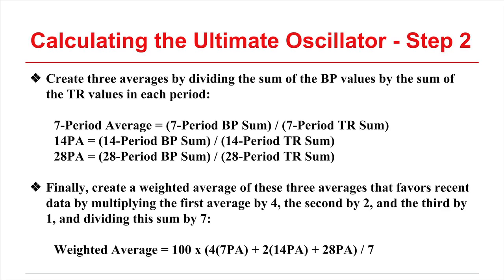This is repeated for the 14-period and 28-period averages. Finally, the last stage weights these averages together to create the final value. The shortest, the seven-period average, is multiplied by four; the middle by two; and the longest, the 28-day period, is multiplied by one. This sum is multiplied by 100 and divided by seven in order to get the final indicator value.